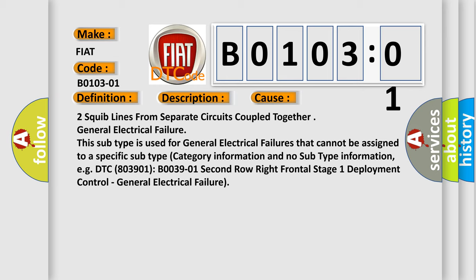For example, DTC B0339-01, B0339-01, 2nd row right frontal stage 1 deployment control, general electrical failure.